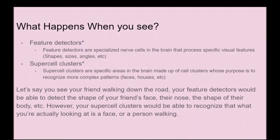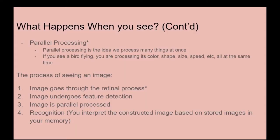When you see, a number of things are happening. Feature detectors are specialized nerve cells in the brain that process specific visual features such as shapes, sizes, and angles. Supercell clusters are specific areas in the brain made up of cell clusters whose purpose is to recognize more complex patterns like faces and houses. For example, if you see a friend walking down the road, your feature detectors detect the shapes of their face, nose, and body, while your supercell clusters recognize that combination as a face, a person walking — or more specifically, your friend. Parallel processing is also involved: we process many aspects at once, so if you see a bird flying, you process its color, shape, and speed all at the same time.